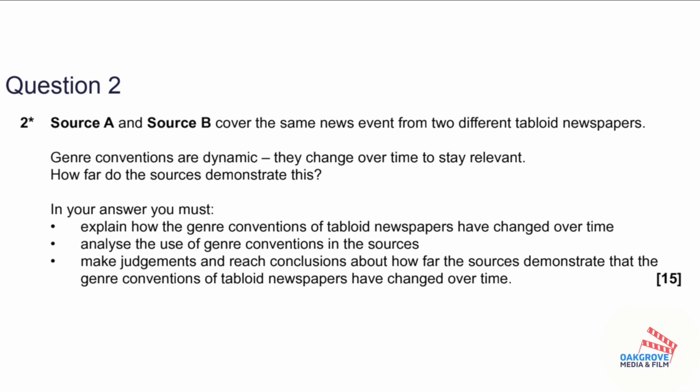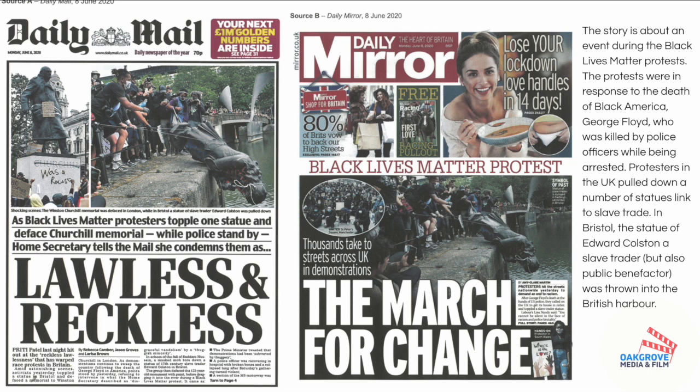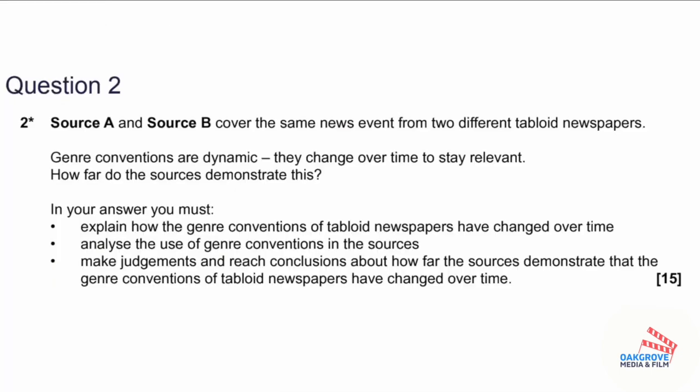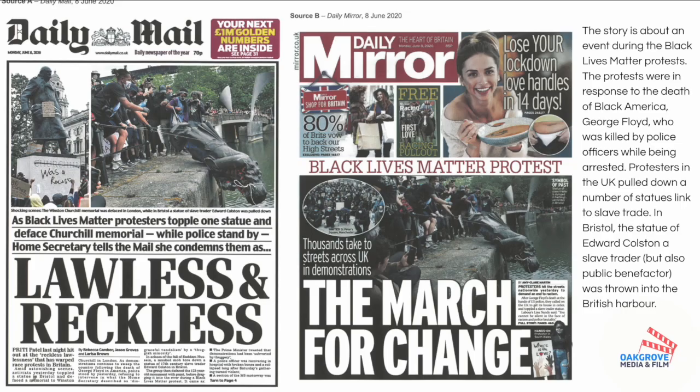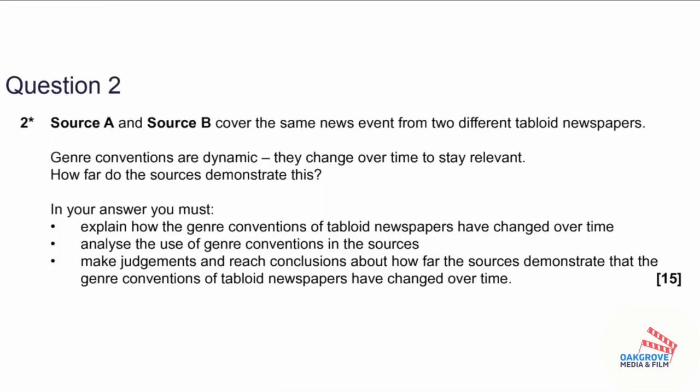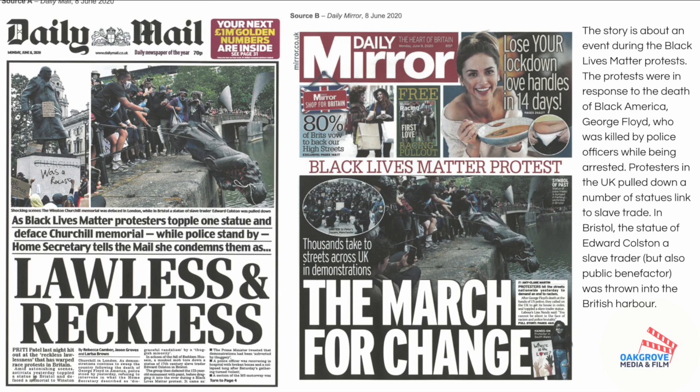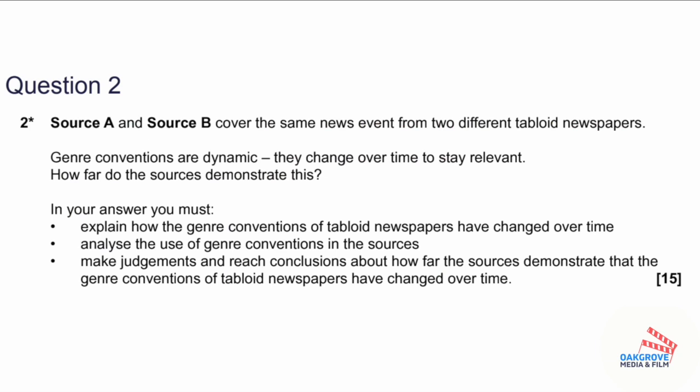Let's have a go at applying our learning to a 15-mark question. The question says: 'Source A and Source B cover the same news event from two different tabloid newspapers. Journalistic conventions are dynamic — they change over time to stay relevant. How far do the sources demonstrate this?' You can pause now and spend 25 minutes responding to this 15-mark question. There's no magic formula, but I would expect at least three different paragraphs, each with their own line of argument, with specific, detailed, and comprehensive reference to the sources.